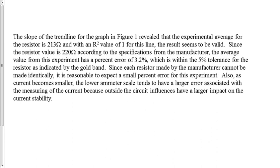Paragraph two is a discussion of results. Describe your results numerically with units, and include relevant statistics such as an R-squared of 1 for the graph and any percent errors. For example, since each resistor made by the manufacturer cannot be made identically, it's reasonable to expect a small percent error. Discuss whether you're confirming what you set out to solve for and whether the data shows the expected relationships.